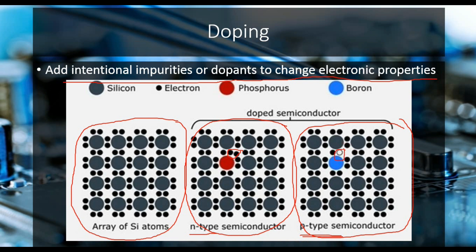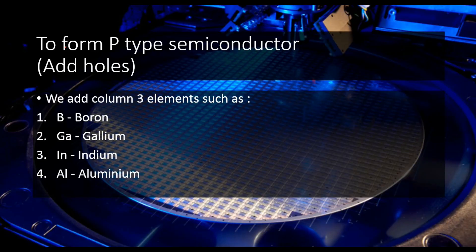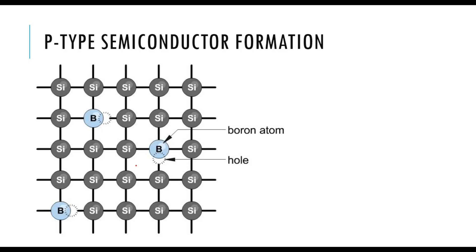If I want to form a p-type semiconductor — that means if I want to add holes in the semiconductor — I can do so by adding column three elements to that structure. Column three elements include boron, gallium, indium, and aluminium. Earlier a silicon atom was present here, forming bonds with all four adjacent silicon atoms. Now the silicon atom has been replaced by a boron atom, so one hole has been created, because boron has just three electrons in the valence shell whereas silicon has four. This hole changes the electronic property of the material.